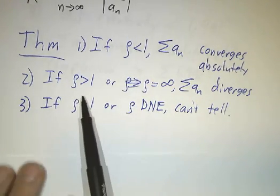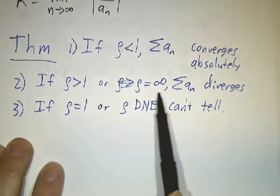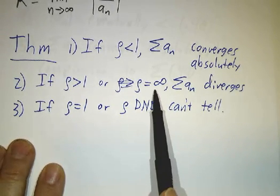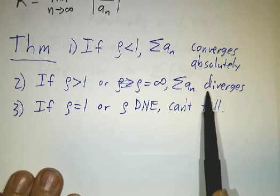If the limit is bigger than one, and limit being infinity counts as bigger than one, then the series diverges.